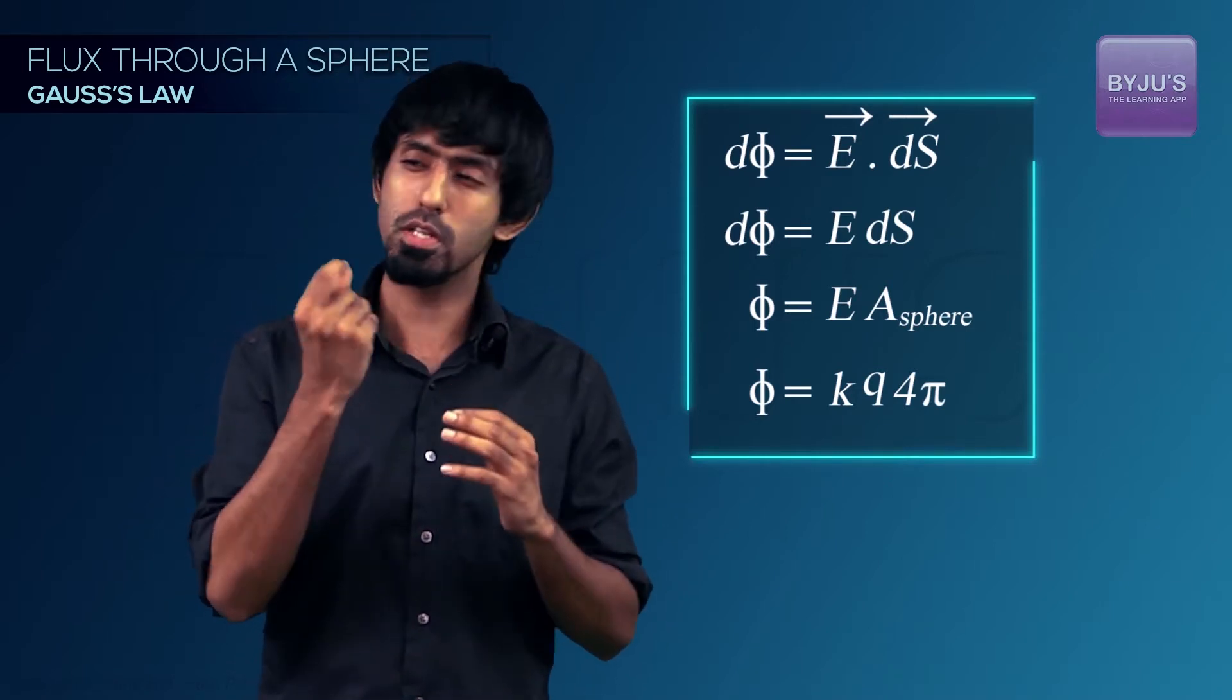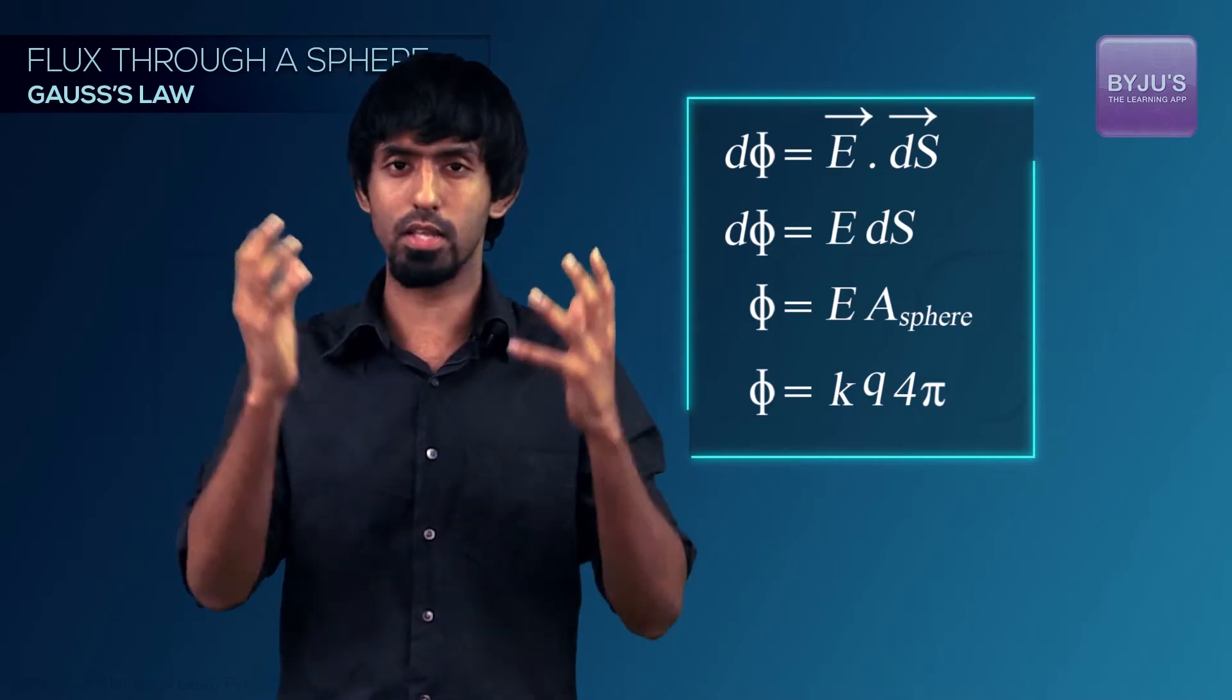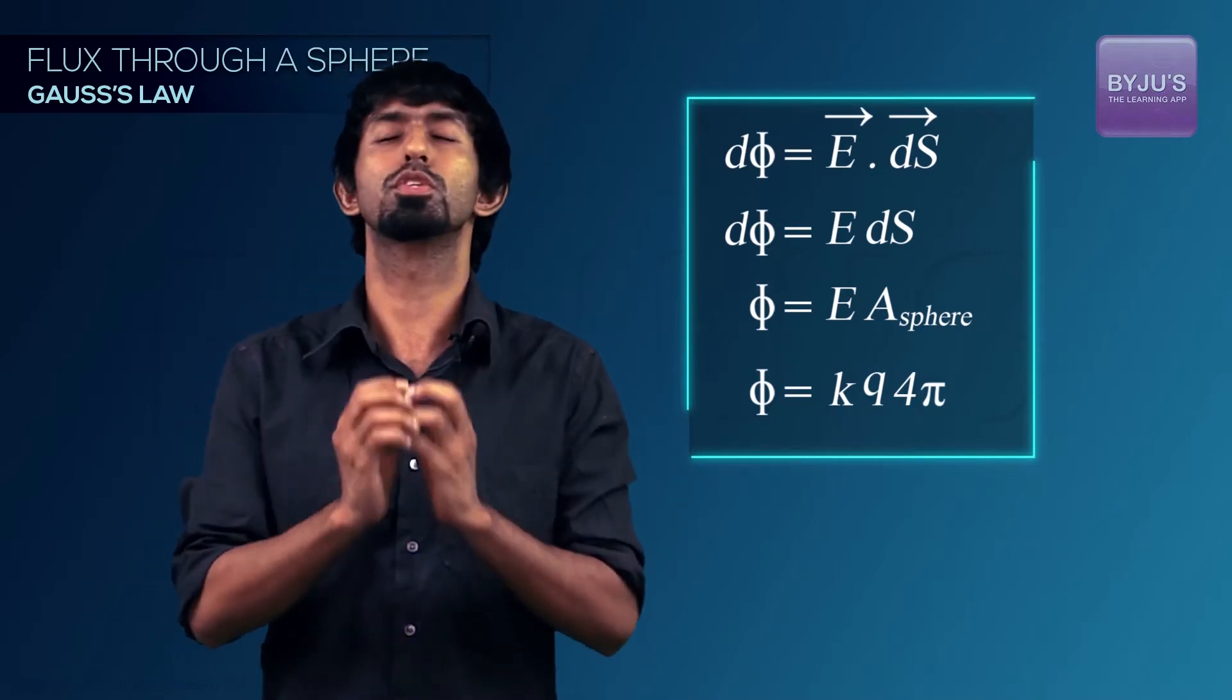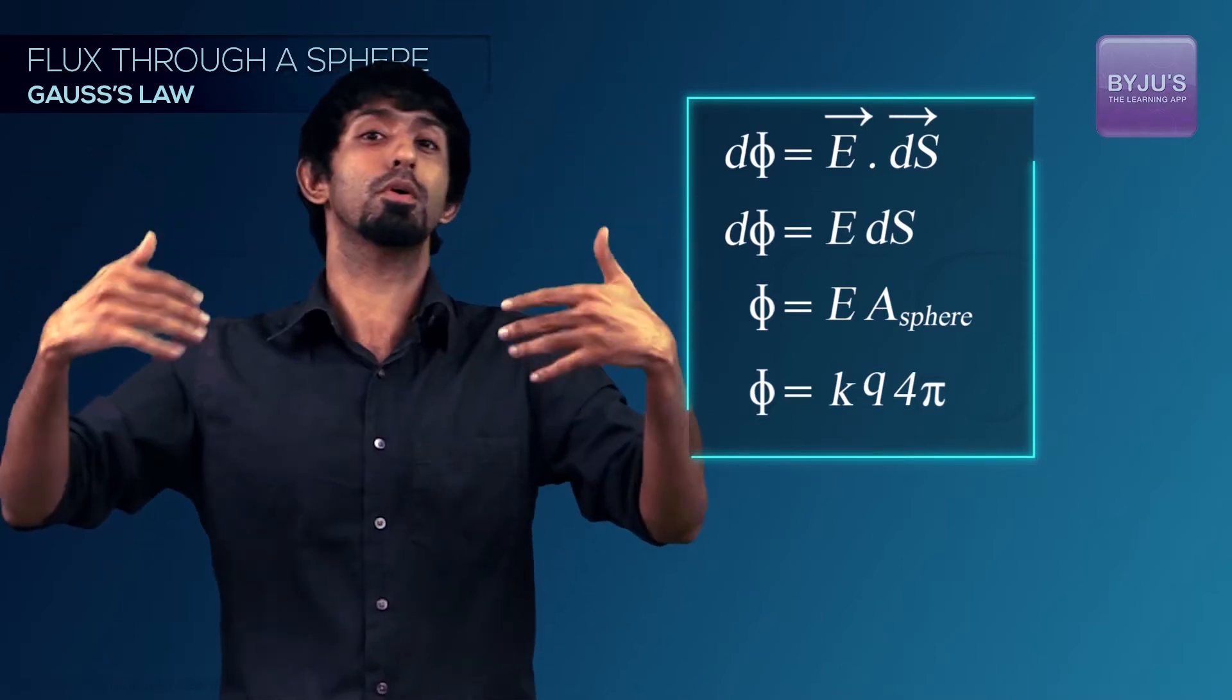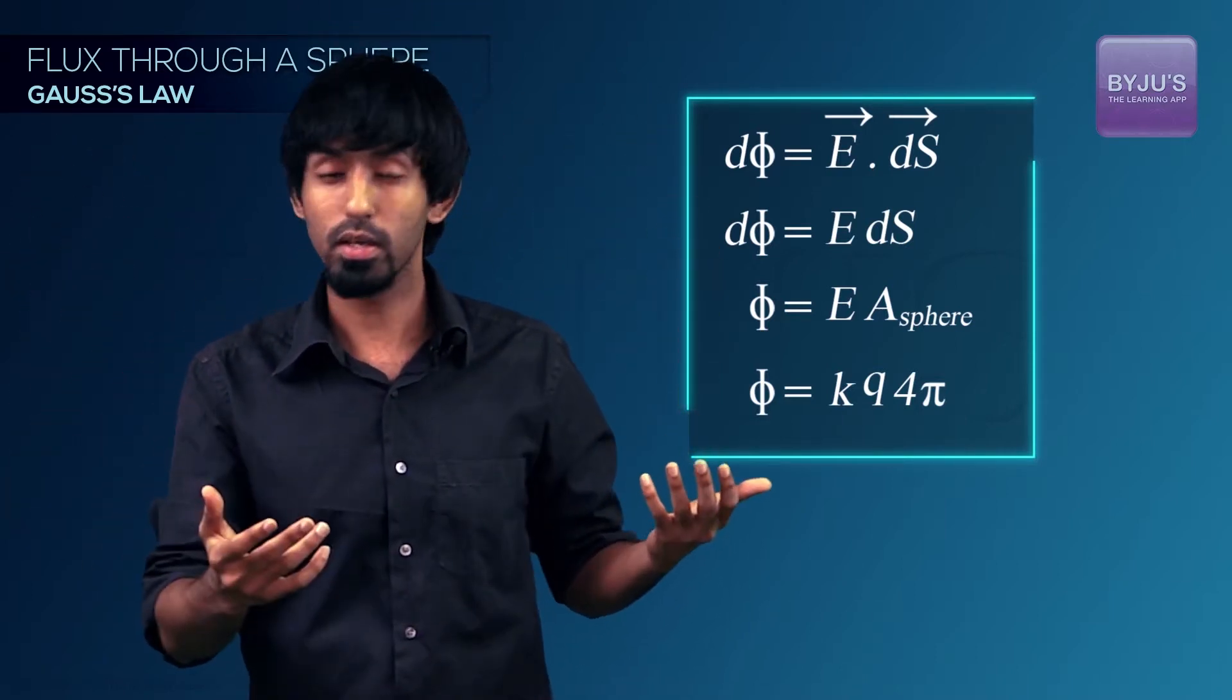Now hold on to that result because this means that I could have taken a much larger sphere or a much smaller sphere and the net flux through that would have been the same. Of course our intuition still points in that direction which is why our water analogy and a fountain is working here. If you had a fountain which is throwing water out, it doesn't matter what size of a surface I keep around it, I'm going to catch the same amount of water.